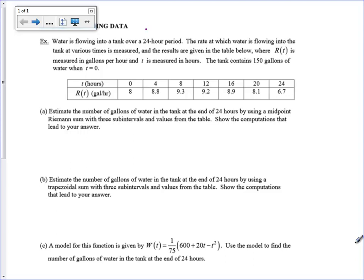So I've got a problem here where water is flowing into a tank over a 24 hour period. And I've got a rate at which the water is flowing. So that's obviously going to be a derivative. It's given at various times. And it's measured down here in gallons per hour.